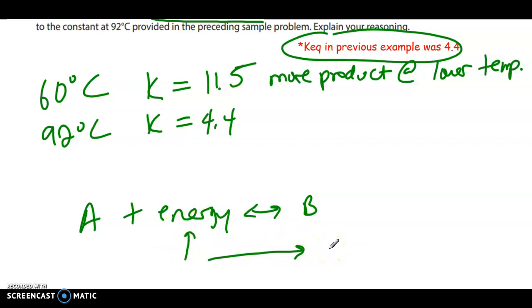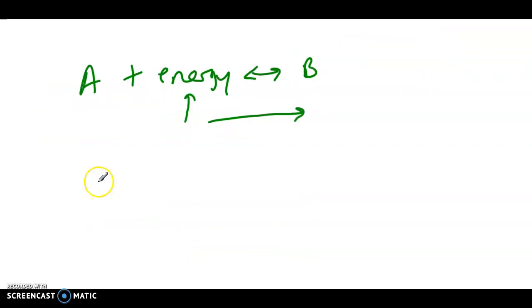But actually, the opposite happened. We decreased the energy or the temperature and we made more product. So that would tell me that if we lowered the temperature from 92 degrees to 60 degrees, it made more product.